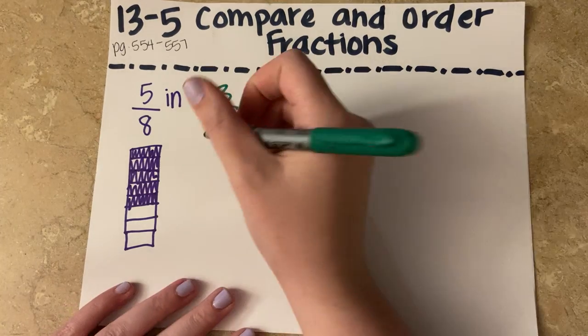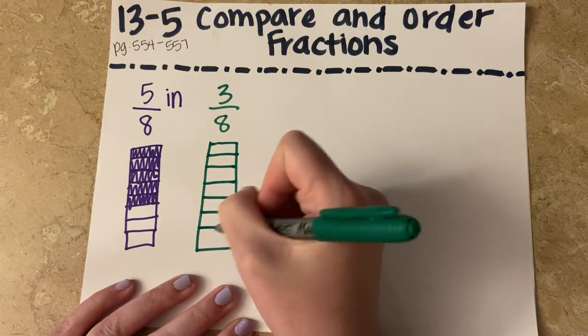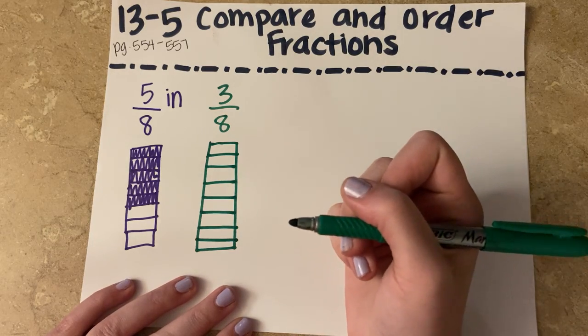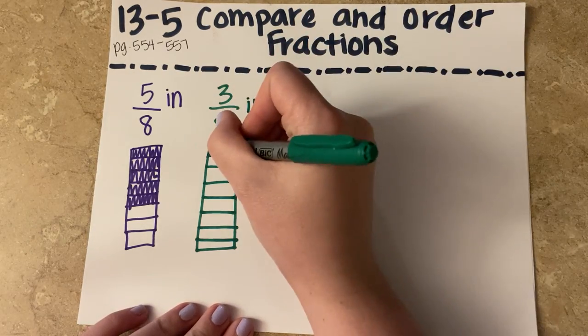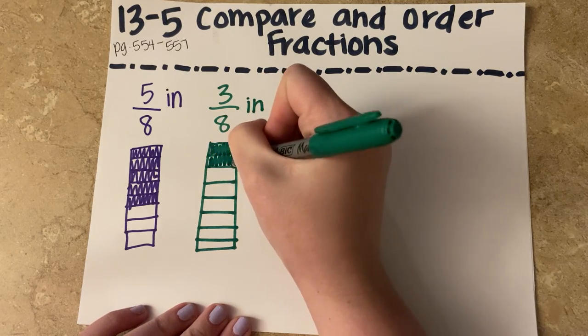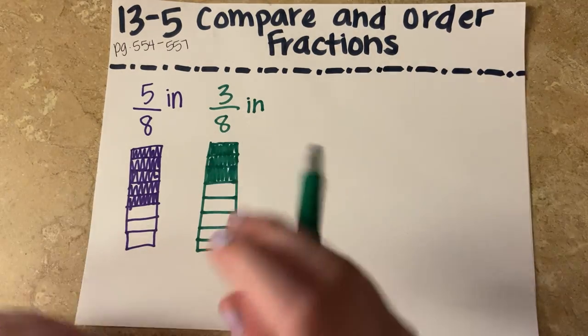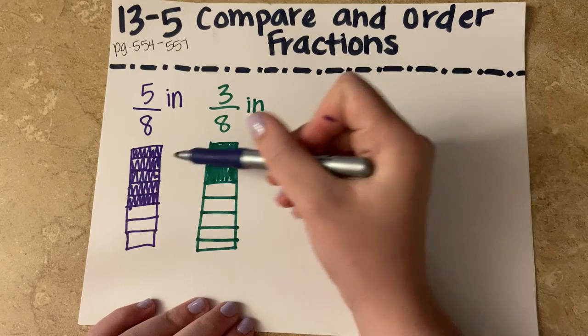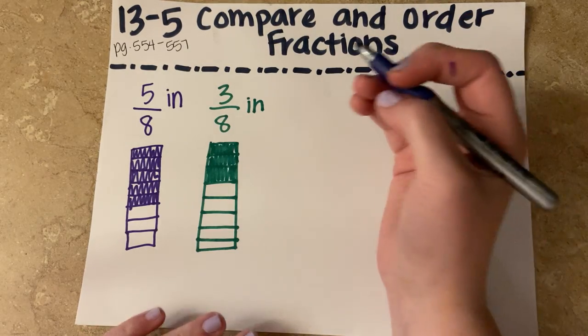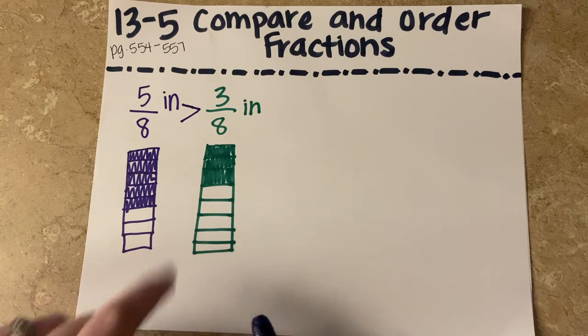And then my other one is also going to be eight in total. And you can do your best to make them as equal as possible, but it doesn't have to be perfect. And this one is three-eighths of an inch. So I'm only going to fill in three of my rectangles or three parts of this one. So which one is bigger? Which one has more parts shaded in? Well, the field cricket was five-eighths of an inch. And according to my picture, it shows me that five is more than three. So five-eighths is greater than three-eighths. So that means five-eighths is bigger than three-eighths.